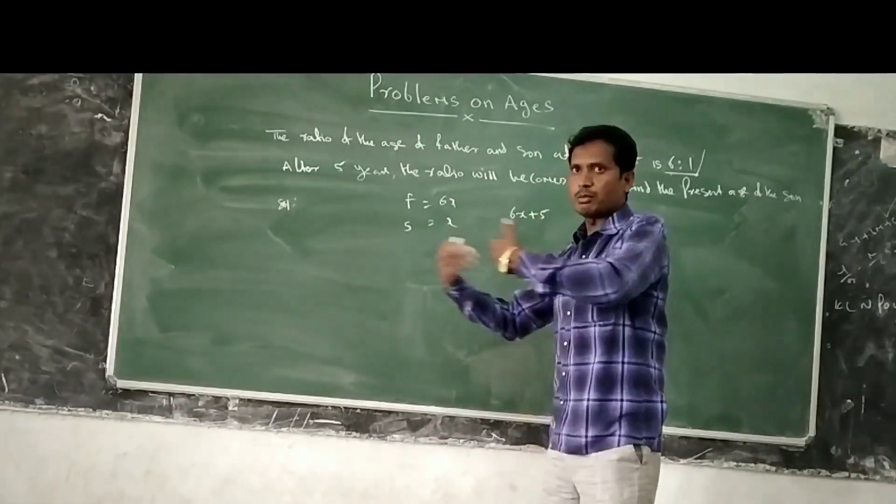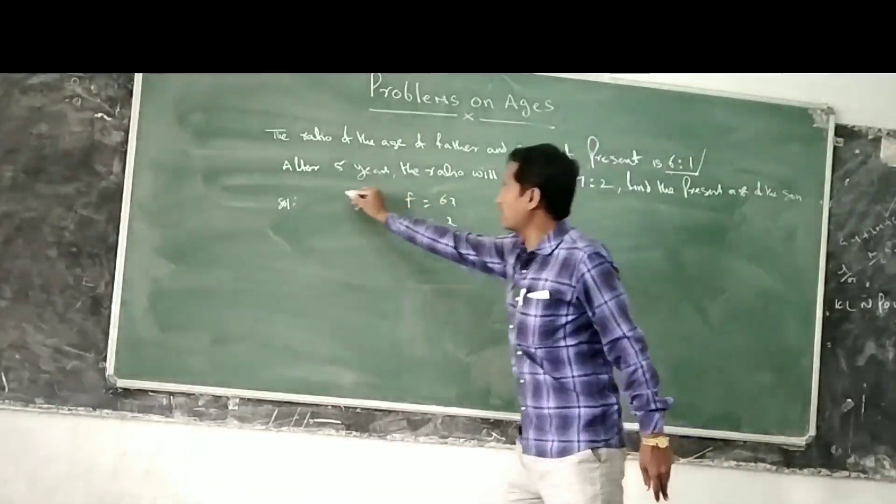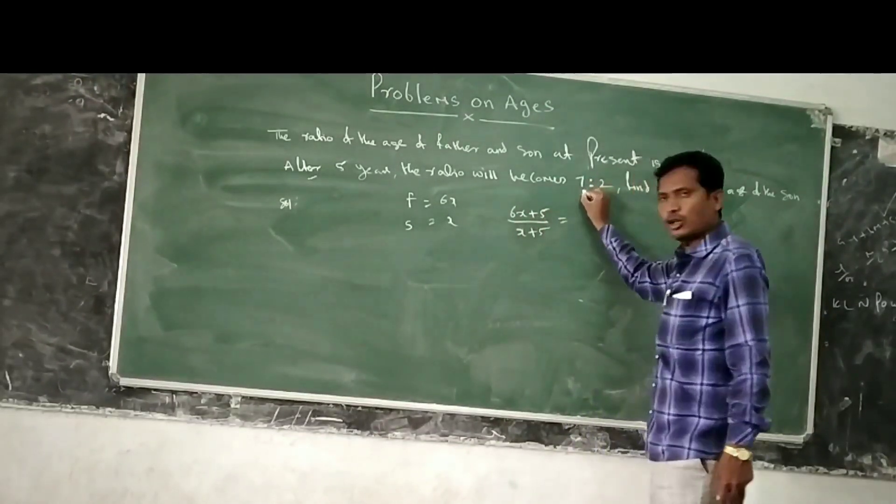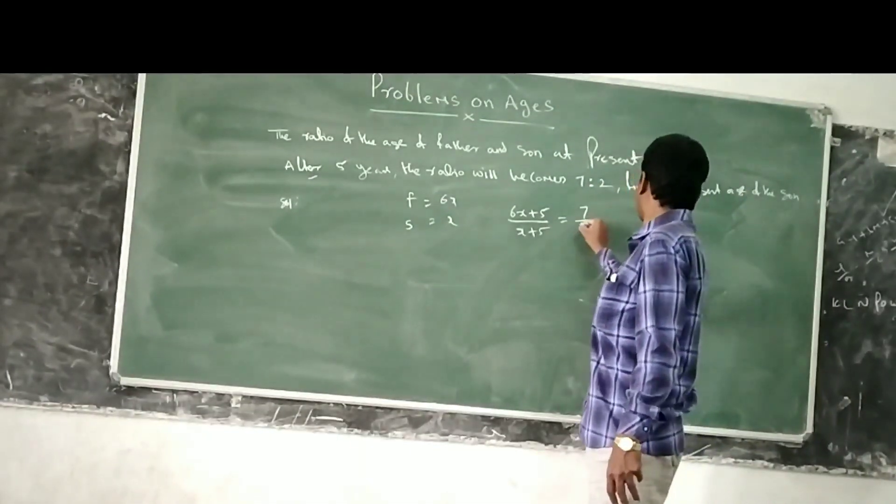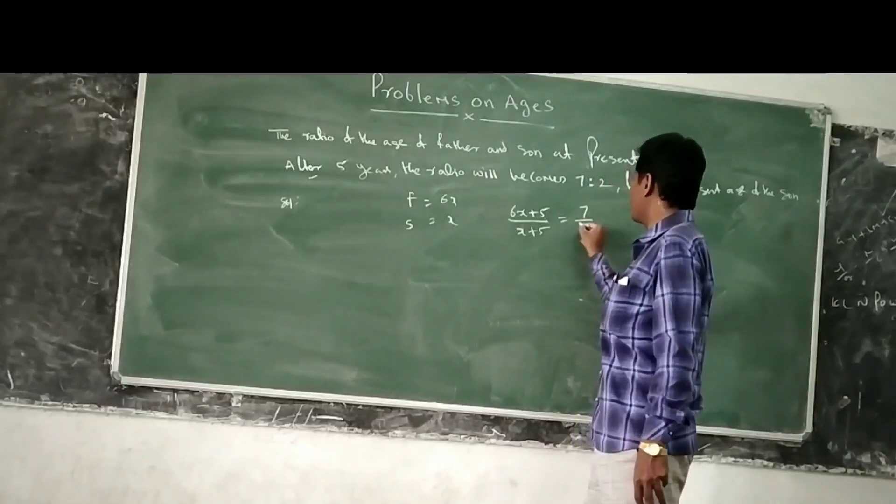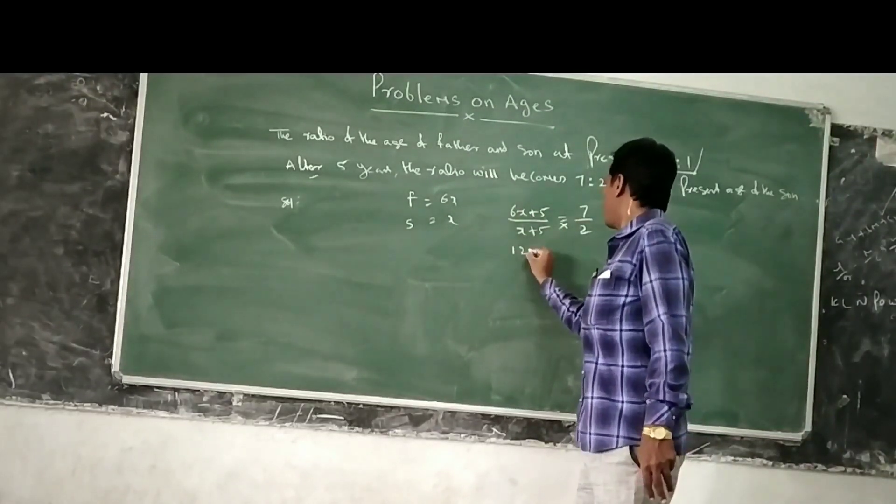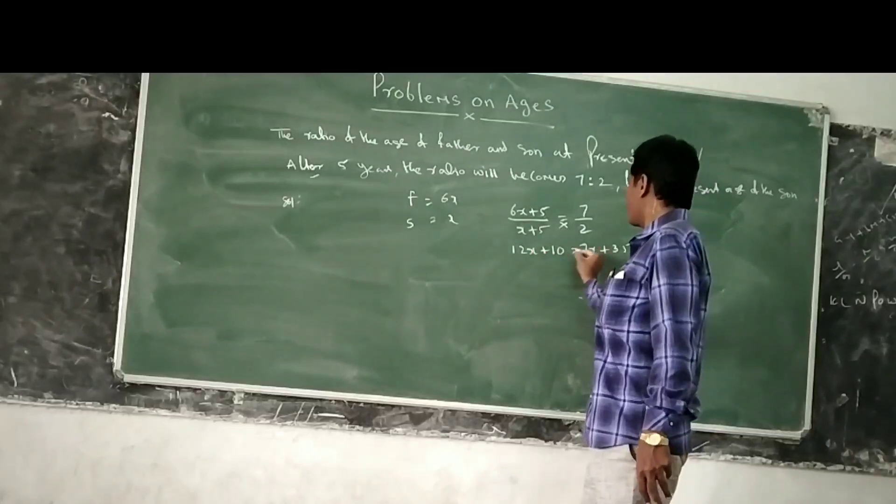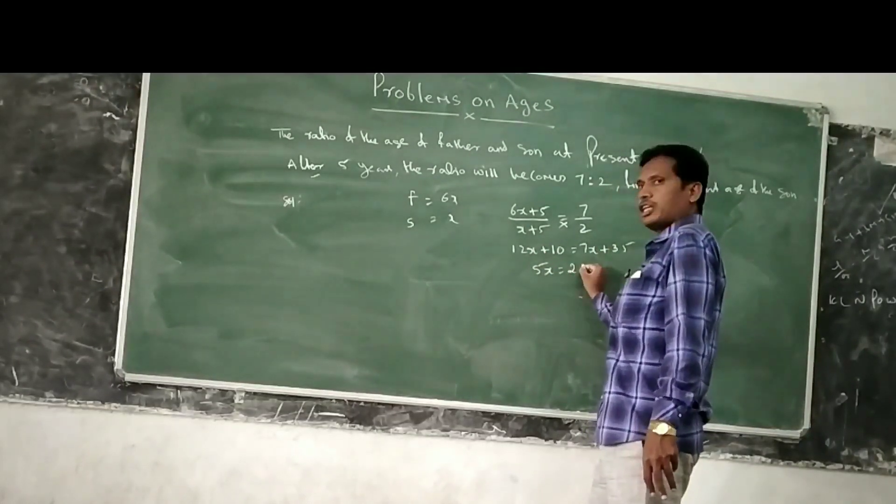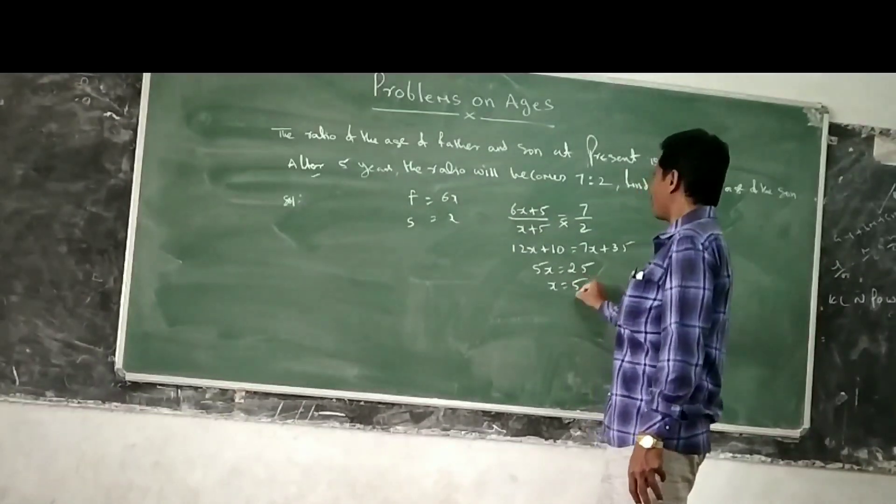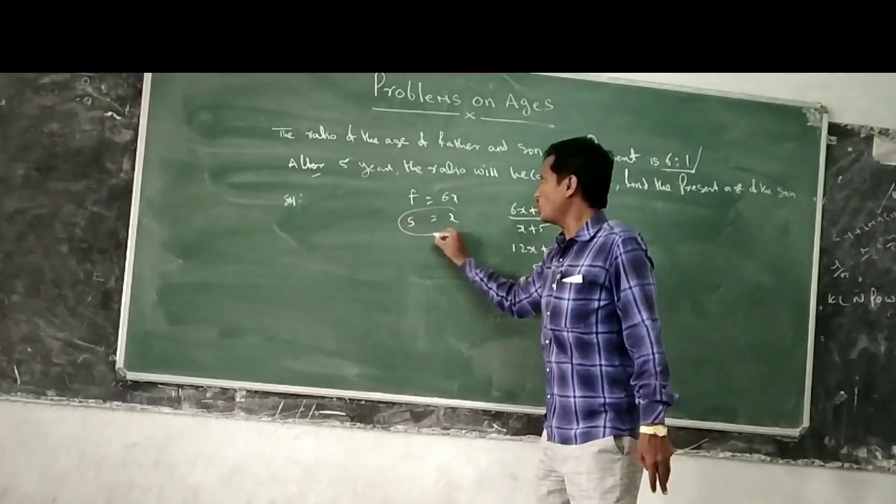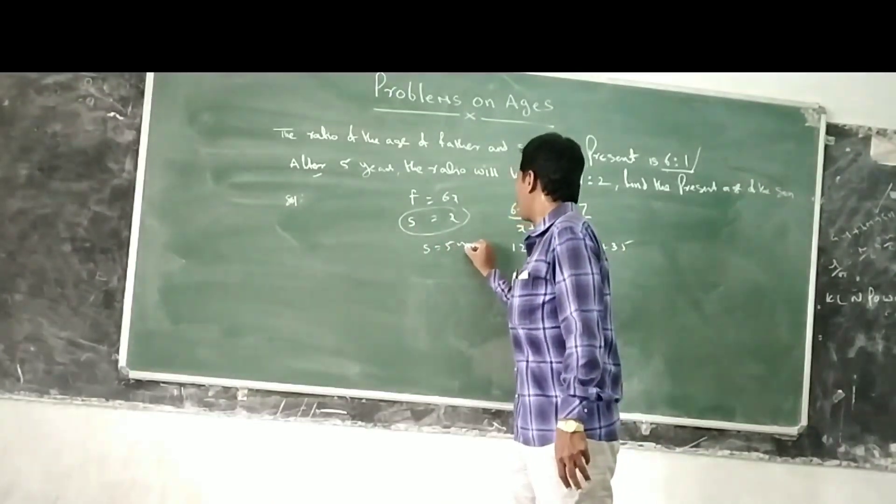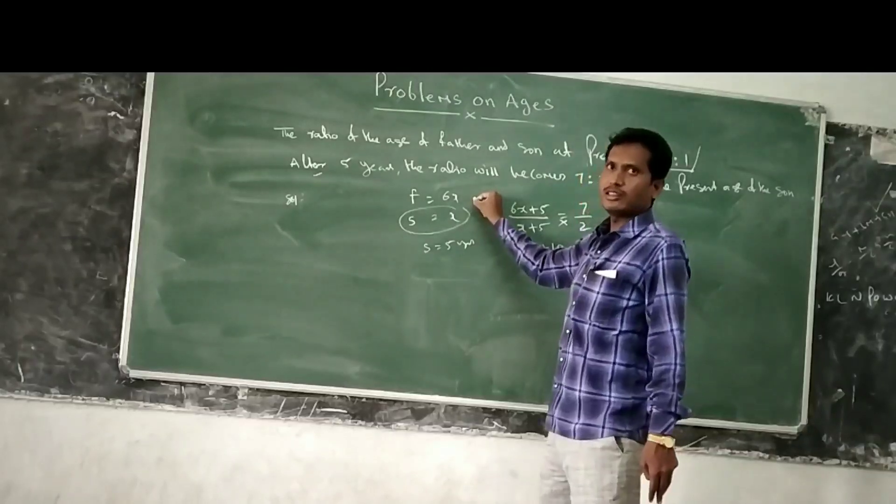After 5 years we add 5. So 6x plus 5 to x plus 5 equals 7 to 2. Cross multiply: 2 times (6x plus 5) equals 7 times (x plus 5). 12x plus 10 equals 7x plus 35. 12x minus 7x, 5x equals 25. x equals 5. They ask the present age of the son. Present age of son is x, 5 years. When they ask the father, 6 into 5, 30 years.